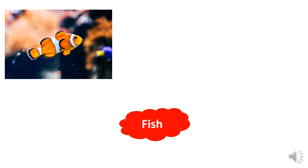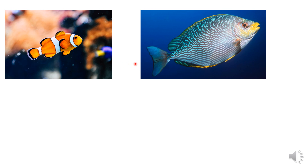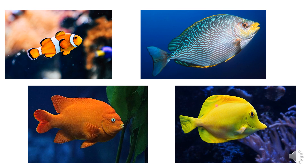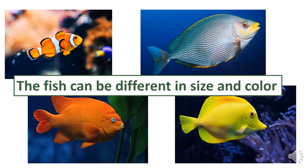Now, how about this animal? It lives in water and it has gills. It is the fish, of course. Let's see other fish. We have this fish — it's bigger than this one and has a different color. And this one also — look at this one, it's yellow. So the fish can be different in size and color.